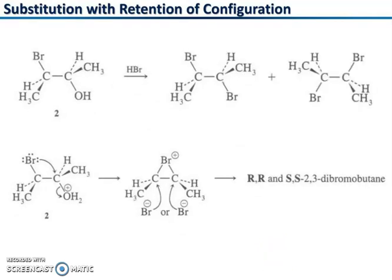In the case of HBr, there are two products. The unshared pair of electrons on bromine assists the carbon where the leaving group is present; the leaving group leaves the center, forming a tricyclic transition state. There is a chance of bromide attacking on one carbon or another carbon, so this gives RR or SS-2,3-dibromobutane.